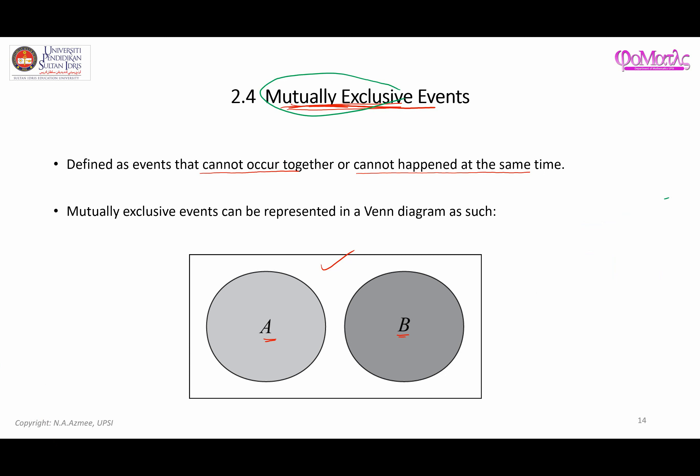What else can you think of when you say mutually exclusive events, other than gender? Male and female are clearly mutually exclusive — you cannot have an intersection; you are either male or female. Another example is pass or fail — you can either pass an exam or fail an exam; it cannot be both passing and failing at the same time.